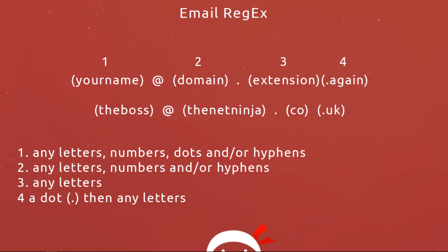Here they are — we have four different parts. The first part is your domain, the bit before the at symbol, for example 'the boss'. Next we have the at symbol. Then the second part is the domain, for example 'the net ninja' or 'gmail'. So it will be 'the boss at the net ninja'. Then we have the dot after the domain, and the third main part is the extension, for example 'com', 'org', or in our case 'dot co'.